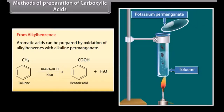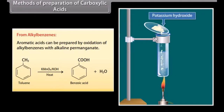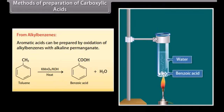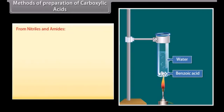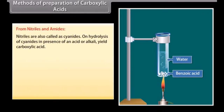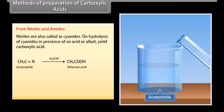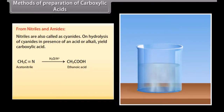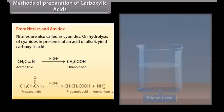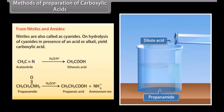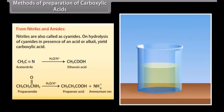From nitriles and amides: Nitriles are also called cyanides. On hydrolysis of cyanides in the presence of an acid or alkali, they yield carboxylic acid. Hydrolysis of acetonitrile in the presence of an acid forms ethanoic acid. On hydrolysis of propanamide in the presence of an acid, it forms propanoic acid and ammonium ion.